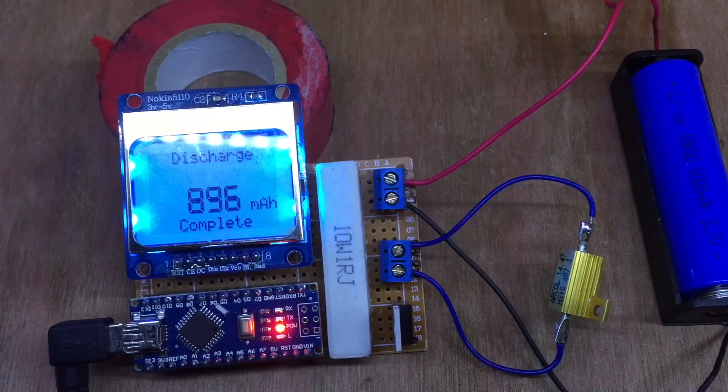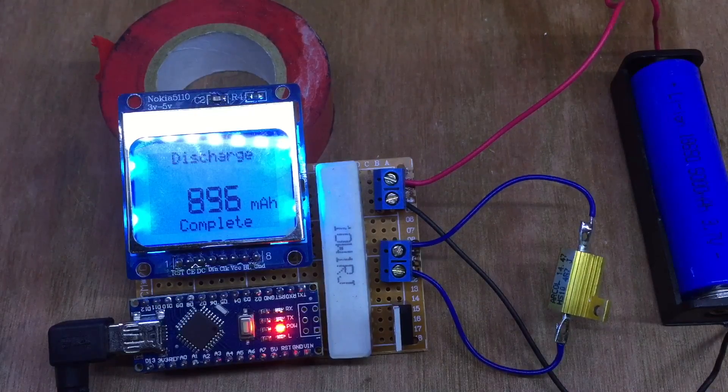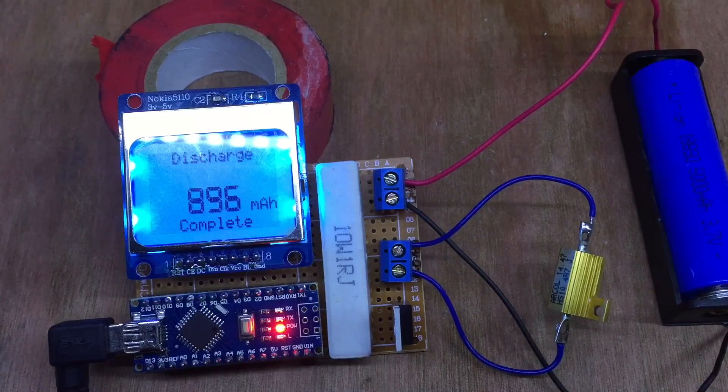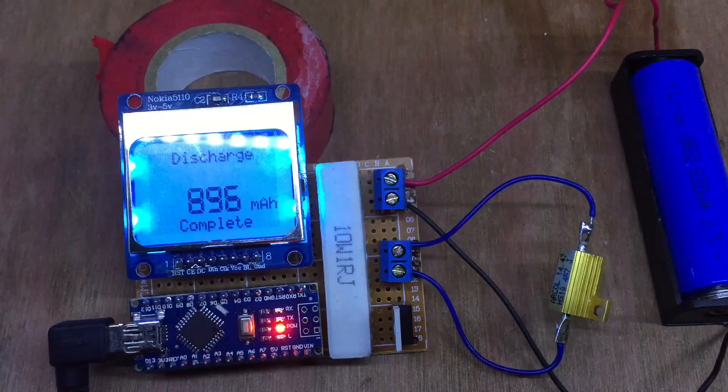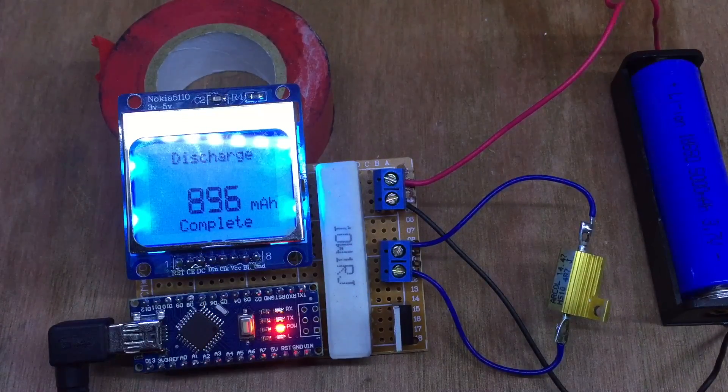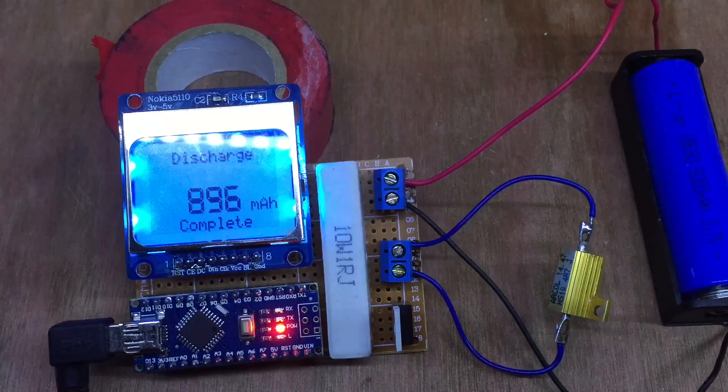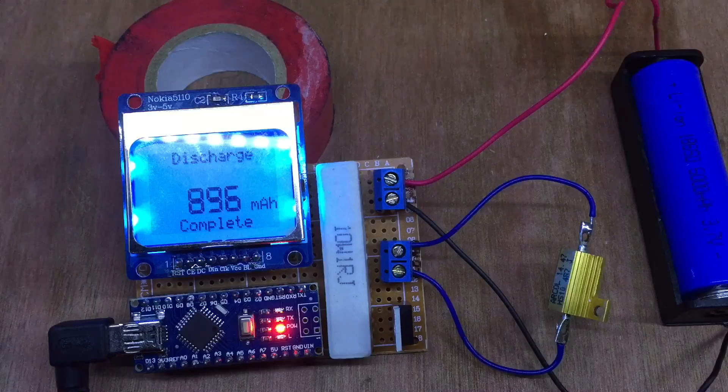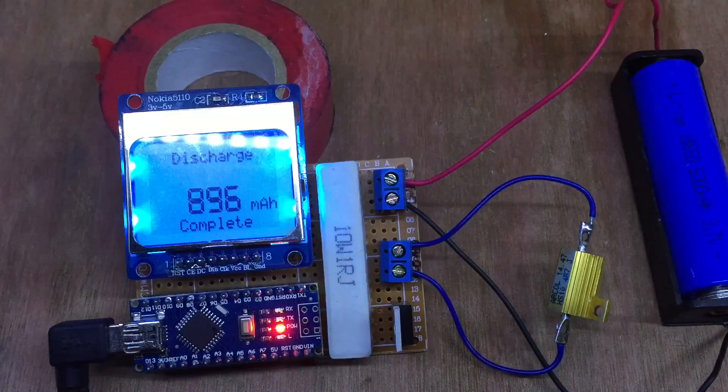Okay, so sadly I missed the end of the discharge sequence, it was taking a while, it's been just over an hour. As you can see, it's equated to 896 milliamp hours, a far cry from the 5,000 milliamp hours claimed on this battery. But this circuit seems to work quite well.